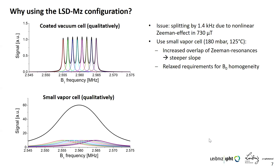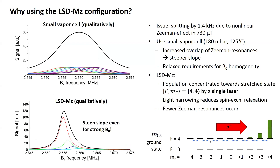If we replace the vacuum cell with a small vapor cell with higher buffer gas pressure operated at higher temperature, the amplitudes and widths increase so that individual transitions overlap. The resulting signal appears as a single broad line with much higher amplitude, giving a steeper slope, and the requirements on bias field homogeneity are relaxed. Applying the LSTMZ pumping concentrates the population towards the stretched states, producing the SERF-like light narrowing effect, which reduces spin-exchange relaxation, narrows the resonances, and suppresses spurious Zeeman resonances from unoccupied states.